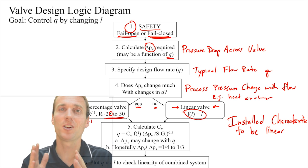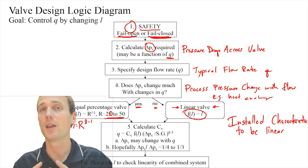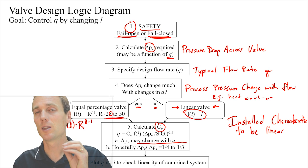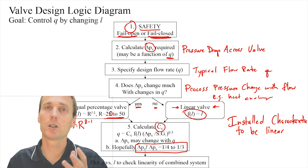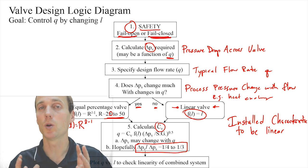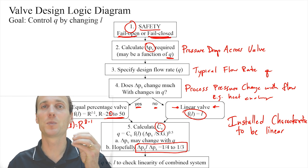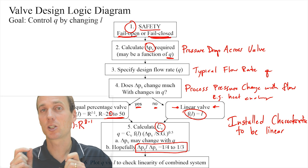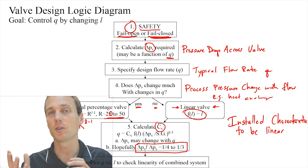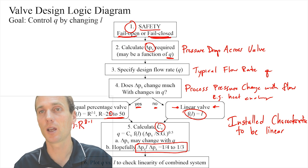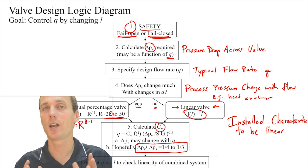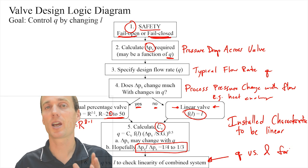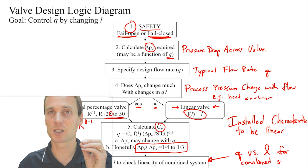If we choose an equal percentage valve, we're going to get a linear response for the valve plus the system. But if the flow rate through the system doesn't really affect the pressure drop, then we can choose a linear valve because then the installed characteristic of both is going to be linear. As a final step, after choosing equal percentage or linear, we want to calculate the CV needed for our particular application. Typically, we want the pressure drop across the valve to be a quarter to a third of the pressure drop across the whole system. We don't want it to be too much because then we have to install larger pumps to compensate. As a final step, we plot Q versus lift L of the combined system to check the linearity of this combined system — the system plus the valve.